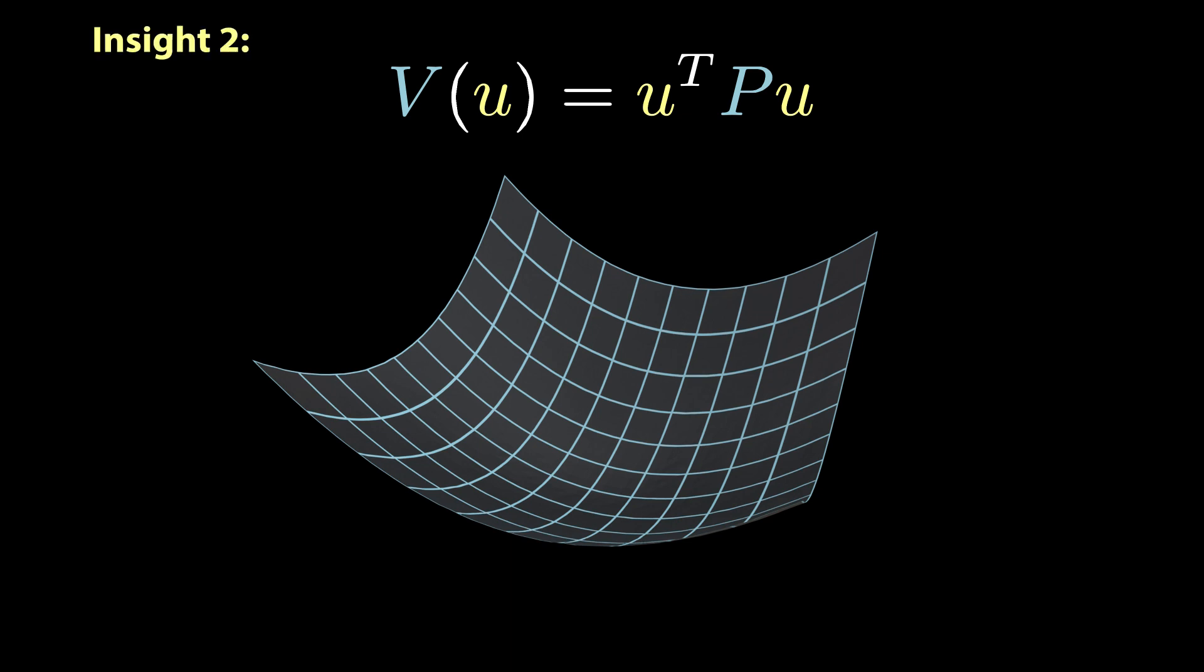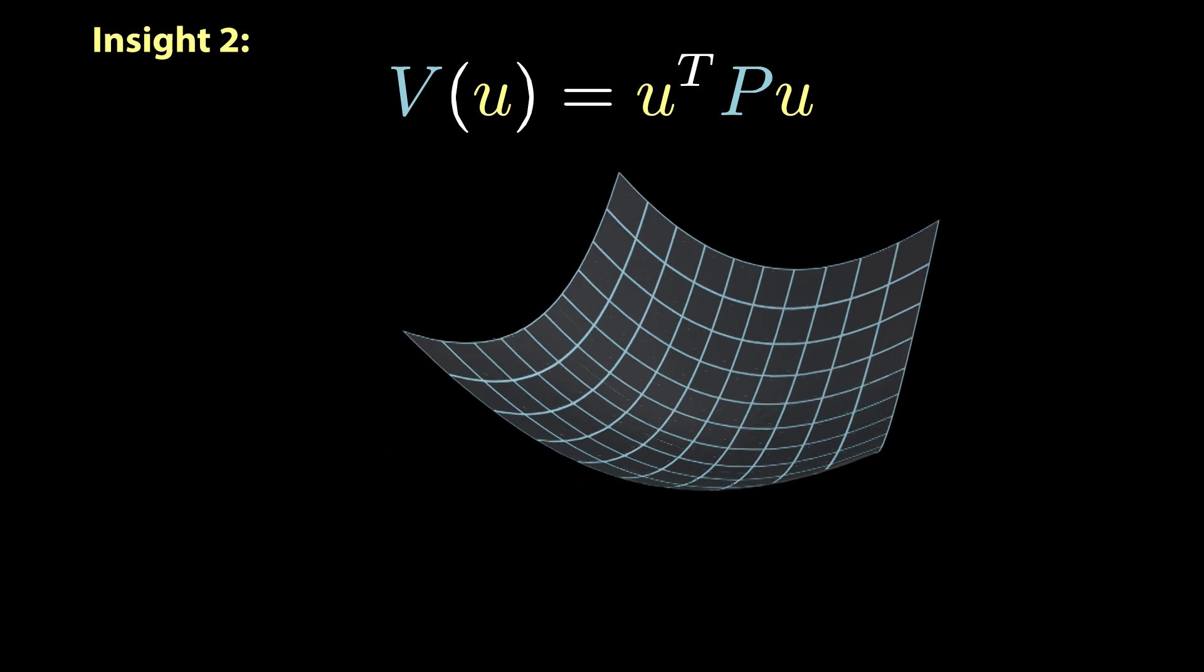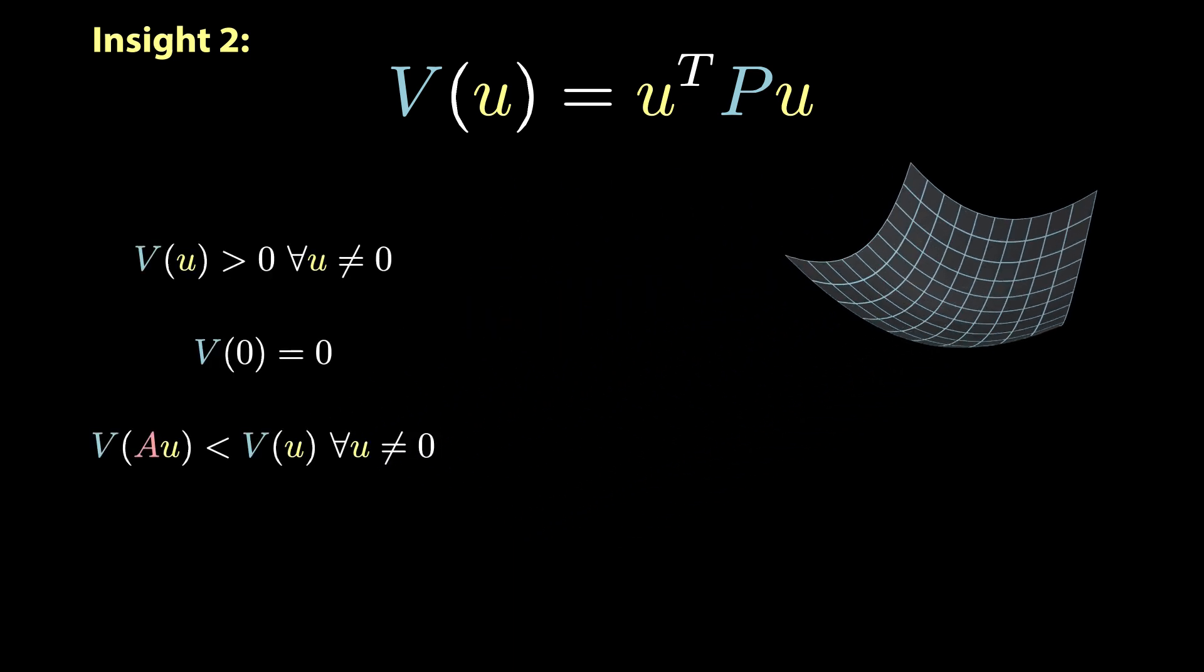The second insight is that the task of searching for a quadratic function v that satisfies Lyapunov requirements is a semi-definite programming problem. To see that, note that the constraint v of 0 equals 0 is automatically satisfied. The positivity constraint is exactly the same as the matrix p being positive definite. And the constraint v of ut plus 1 smaller than v of u of t is the same as a times u times p times a times u is smaller than u transpose p times u. Or in other terms, after a slight rearrangement, it's the same as the matrix p minus a transpose pa being positive definite.